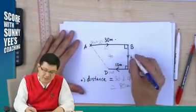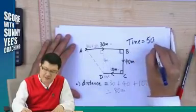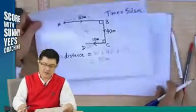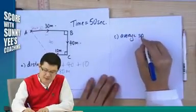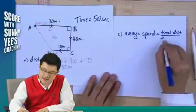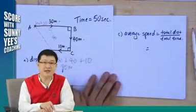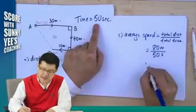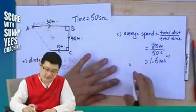Now say this object moves from A to B, B to C, C to D, and it takes a total time of 50 seconds. If they ask you to find the average speed, average speed equals total distance divided by total time. The total distance is 80 meters, the total time is 50 seconds, giving 1.6 meters per second as the average speed.